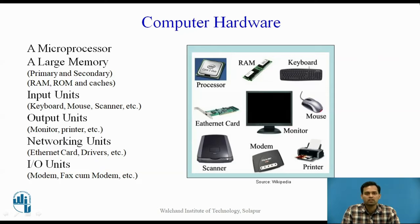Now we will see computer hardware. Generally, a computer system will require a microprocessor, which is used for computing or to perform different tasks. It requires a large memory consisting of primary and secondary memory such as RAM, ROM, and cache memory. The computer system also includes input units such as keyboard, mouse, scanner, etc., which are used to give inputs to the computer.